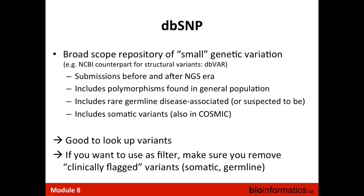dbSNP is not a single uniformly processed study but rather a meta-database of various studies accumulated over time, including submissions before and after the next-generation sequencing era — from small ancient sequencing studies to high-throughput whole-genome NGS. It includes polymorphisms found in the general population, but also disease-associated and cancer variants. It is a good resource for looking up variants, but if you start using it as a filter, you may filter out something important — for example, because it contains somatic cancer variants, discarding anything from dbSNP could remove interesting results from your data.